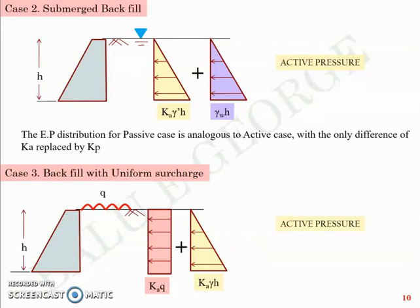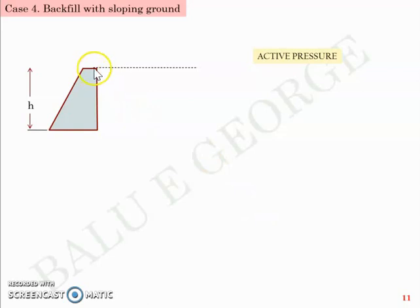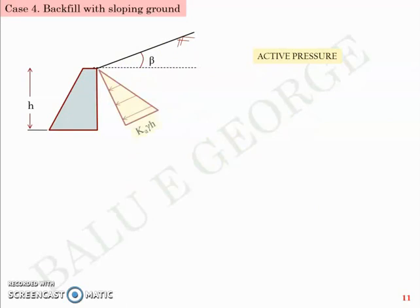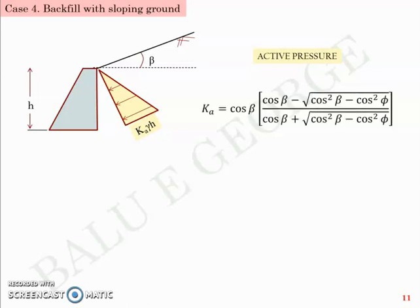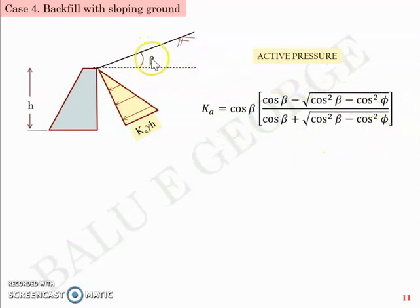The next case is a backfill with a sloping ground. In previous cases, the backfill was level and horizontal. Here the backfill is inclined at an angle β. The pressure distribution diagram is the same triangular shape, but the value of Ka is different — Ka becomes a function of β, expressed as cos β multiplied by a term involving both β and φ. This equation reflects both the angle of internal friction φ and the angle β of the sloping ground.